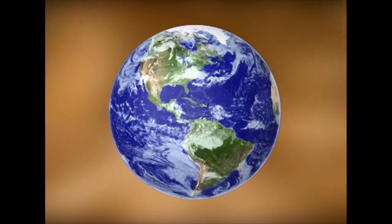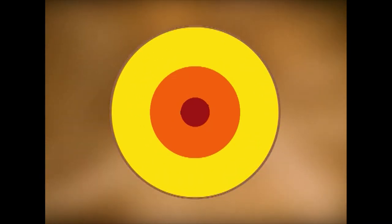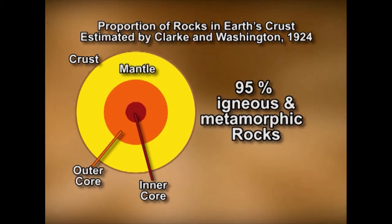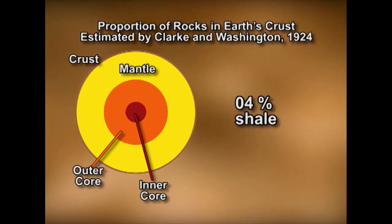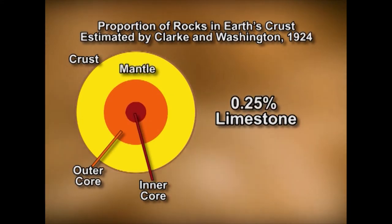In earlier episodes, we saw classification of minerals, and we shall continue from there, discussing today rock-forming minerals, especially silicates, and to a lesser extent oxides and sulphides. A very early estimate by Clark and Washington suggested that the upper 13 km of the earth's crust has the following proportion of rocks: 95% igneous and metamorphic, 4% shale, 0.075% sandstone, and 0.025% limestone.